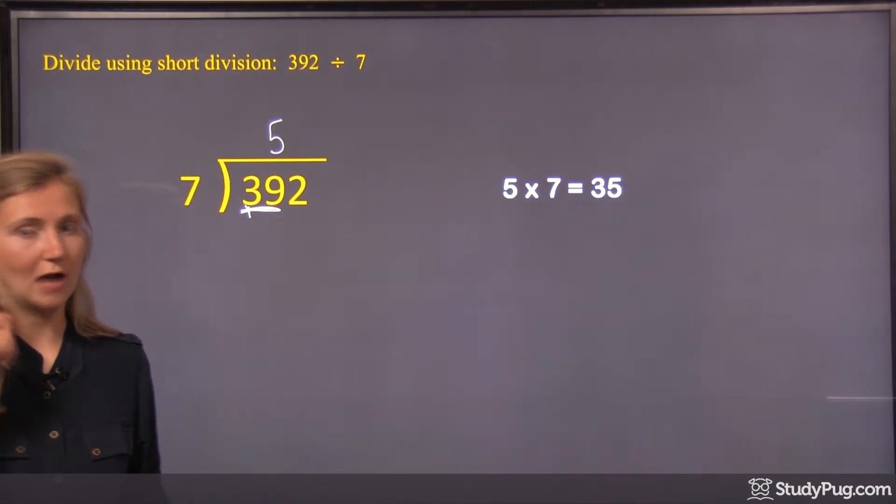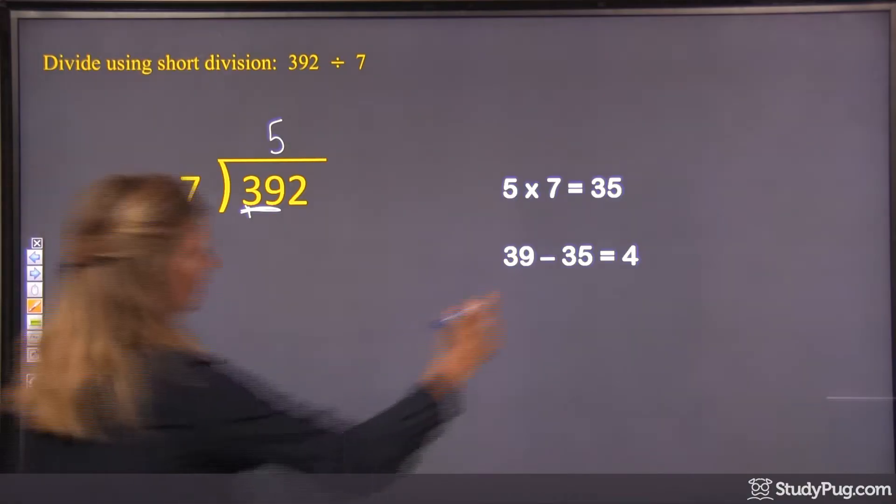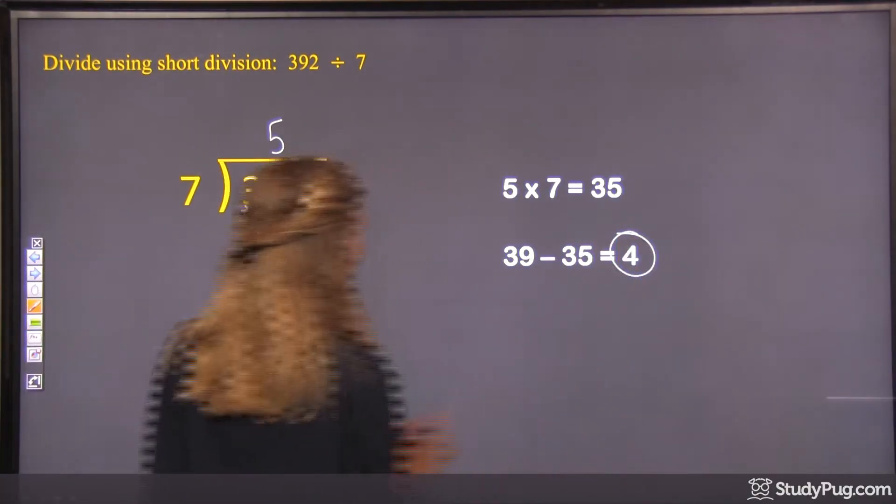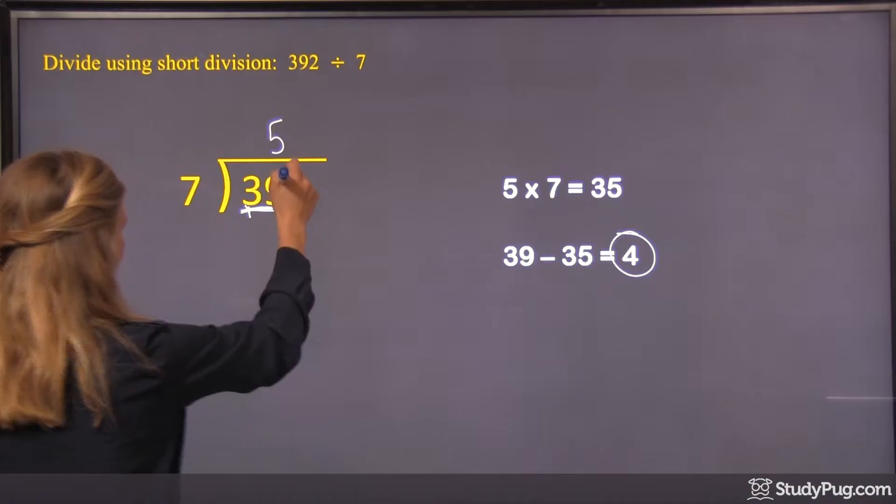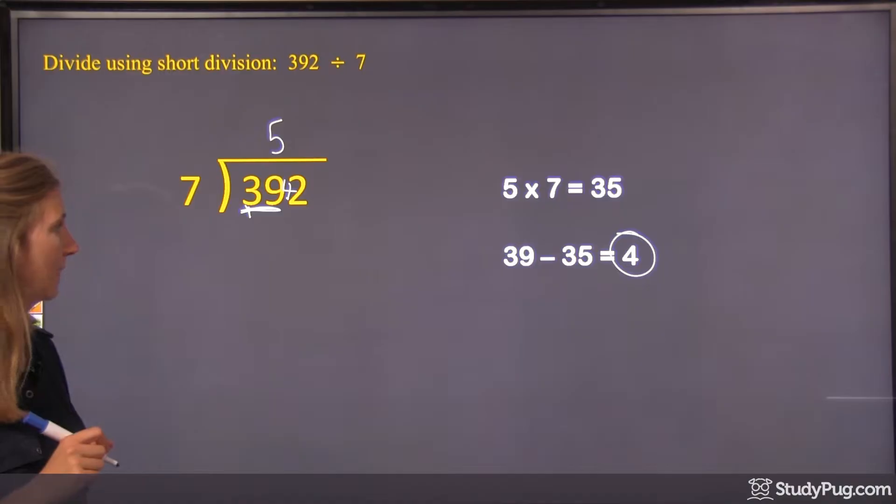So we're going to do that subtraction in our heads. The 39 minus 35, well that's 4. So this 4 here, we're going to put in front of the next place value, the next digit that we're dividing by.